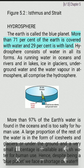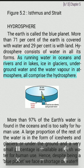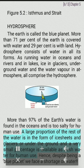The Earth is called the Blue Planet. More than 71% of the Earth is covered with water and 29% is with land. Hydrosphere consists of water in all its forms — as running water in oceans and rivers and in lakes, ice and glaciers, underground water and water vapor in the atmosphere. More than 97% of the Earth's water is found in the oceans and is too salty for human use. A large proportion of the rest of the water is in the form of ice sheets and glaciers or underground, and only a very small percentage is available as fresh water for human use.